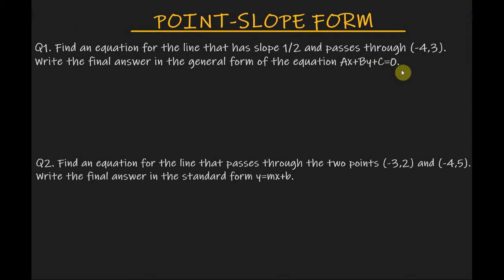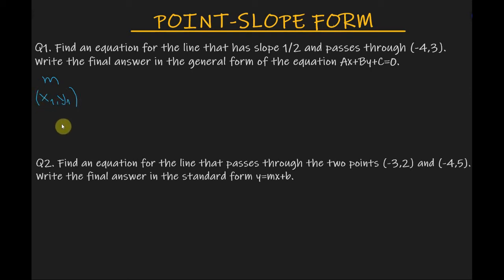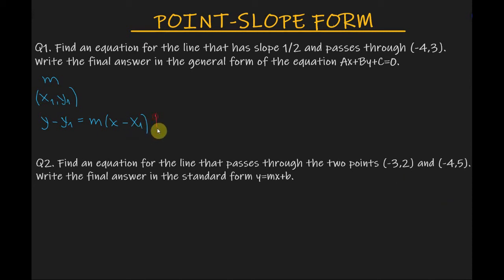An equation of a line with slope m that passes through (x₁, y₁) is: y minus y₁ equals m times x minus x₁. This is the so-called point-slope form of an equation of a line.